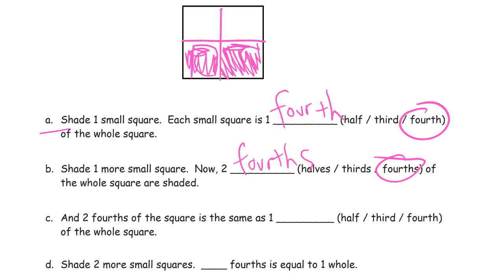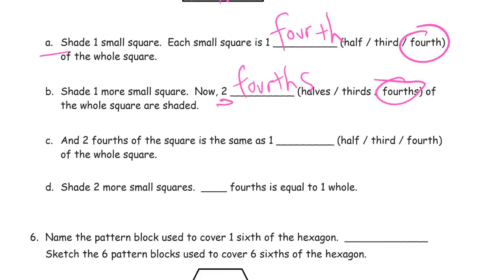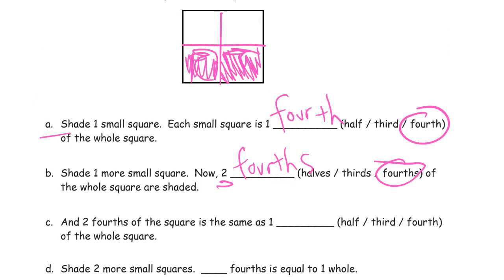Wait a minute. But it says how many fourths. Yeah, there's still fourths. But now two of them are shaded in. So I'm counting one, two shaded fourths. And now for C.